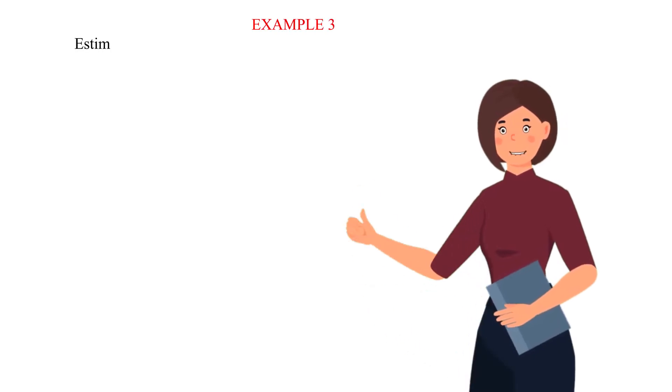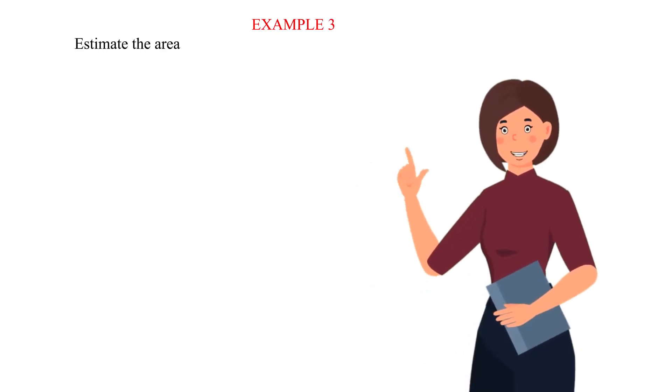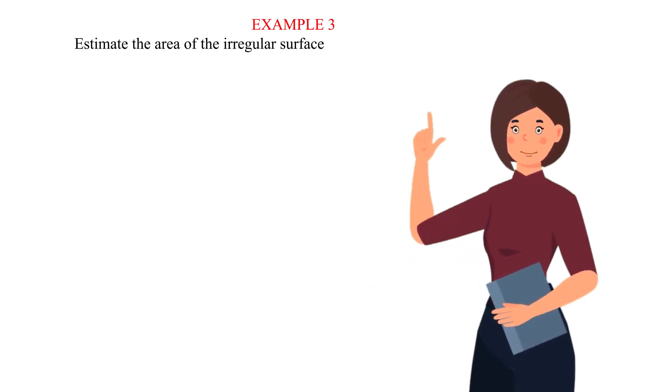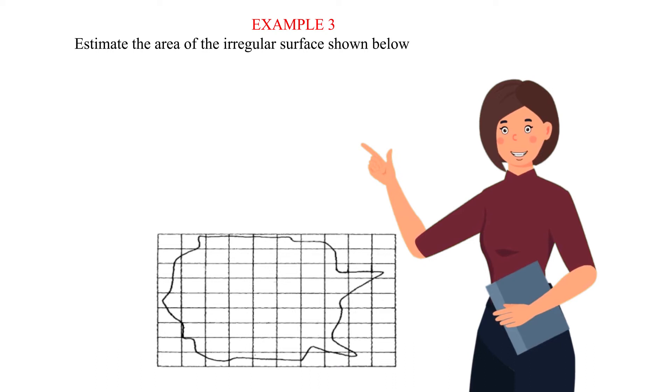Example 3. Estimate the area of the irregular surface shown below by counting the small squares. Solution.